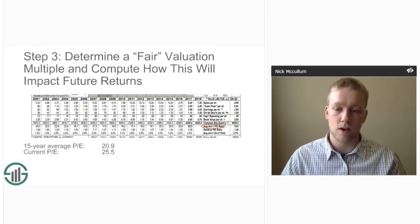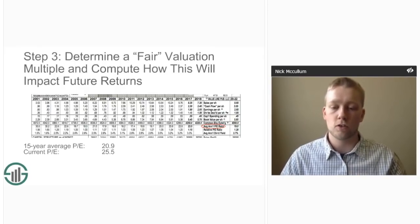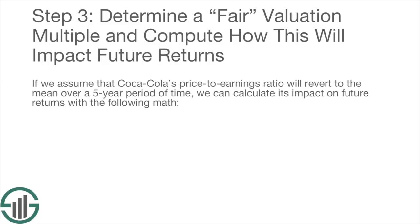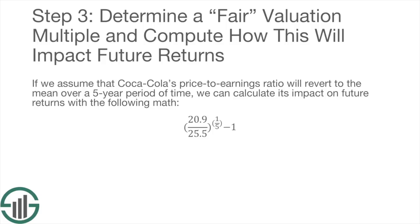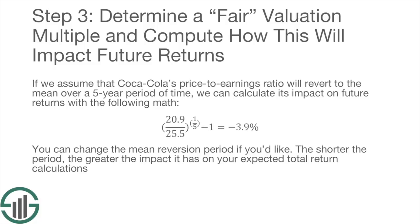Right now, Coca-Cola's price-to-earnings ratio is 25.5. Coca-Cola's current P/E is significantly above its normal level, which means the company's valuation is probably going to contract, reducing total returns moving forward. To determine how this affects future total returns, you have to pick a reasonable time period over which valuation reverts to its historical average — five years is usually safe. You take the current valuation multiple, divide it by the long-term average, then raise this fraction to the inverse power of the number of years for mean reversion to occur. Subtract one and this gives you the annual impact on future total returns. For Coca-Cola, this gives a negative 3.9% per year impact on expected total returns.